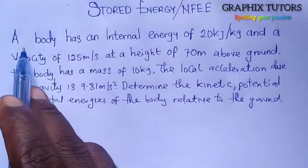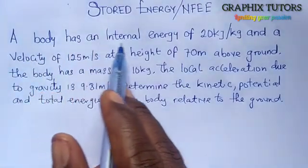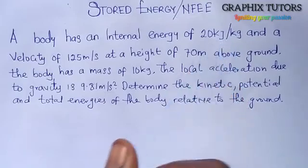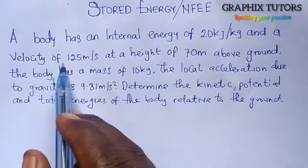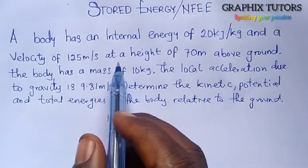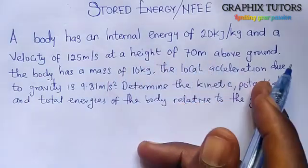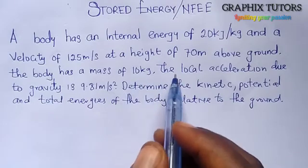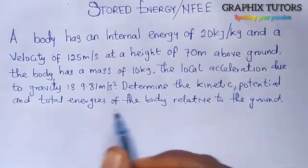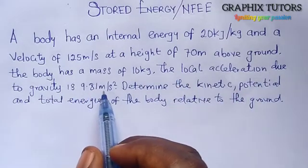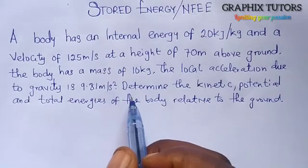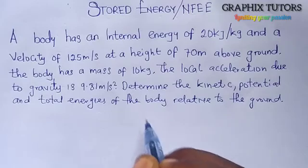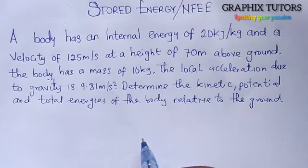The problem goes like this: a body has an internal energy of 20 kilojoules per kilogram and a velocity of 125 meters per second at a height of 70 meters above ground. The body has a mass of 10 kilograms. The local acceleration due to gravity is 9.81 meters per second squared. Determine the kinetic, potential, and total energies of the body relative to the ground.